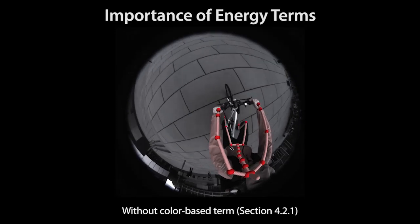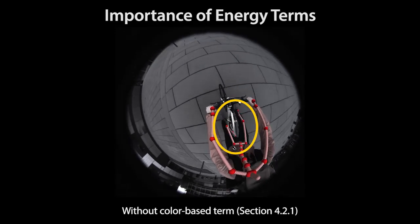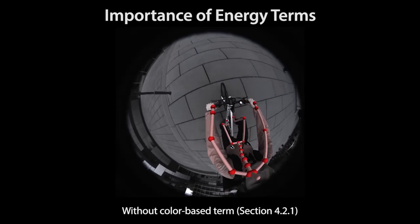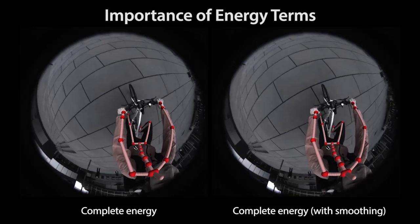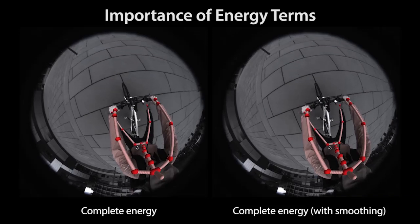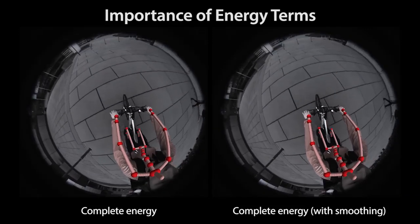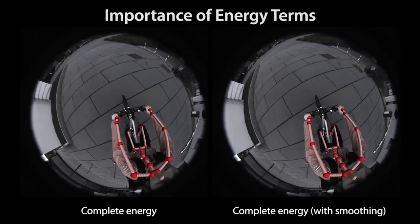And without our color-based term, erroneous body part detections may result in incorrect poses, for example for the legs. By using all terms in our energy, we combine their benefits and overcome their limitations. Additional smoothing of the joint angles, as also applied in standard motion capture editing software, can further improve the perceived quality of our results.